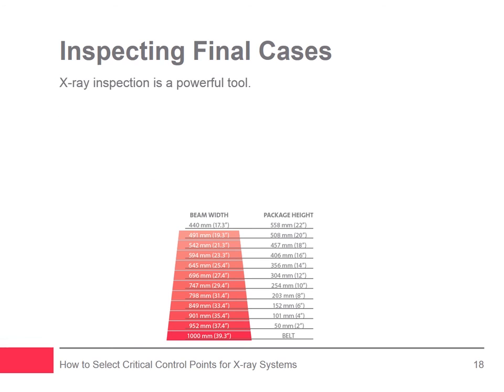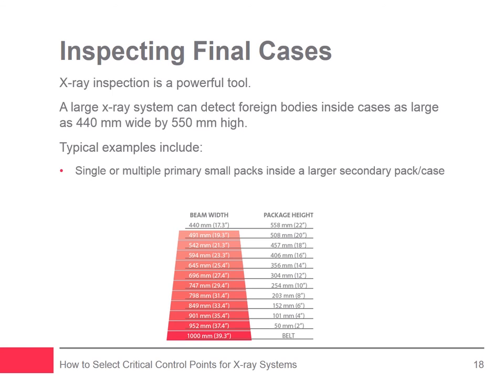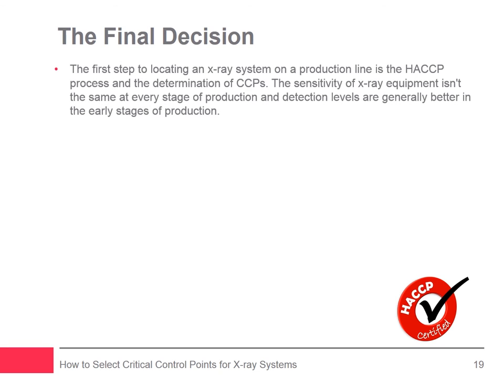X-ray inspection is a powerful tool. A large x-ray system can detect foreign bodies inside cases as large as 440 mm wide by 550 mm high. Typical examples include single or multiple primary small packs inside a larger secondary pack or case, or loose products in large bags or sacks before they are shipped. The first step to locating an x-ray system on a production line is the HACCP process and the determination of CCPs. Without that crucial background information, x-ray inspection won't be grounded in the overall HACCP approach and product safety could be compromised.